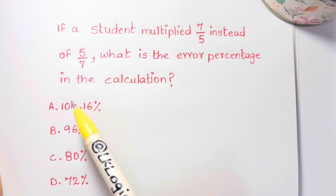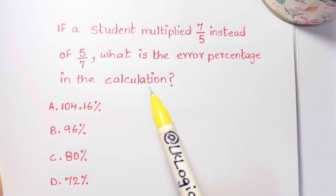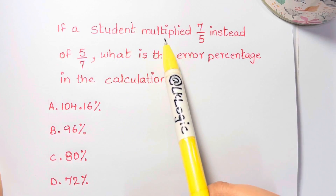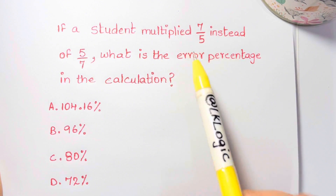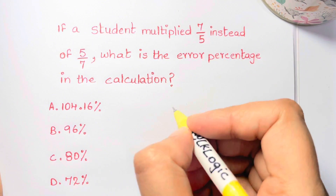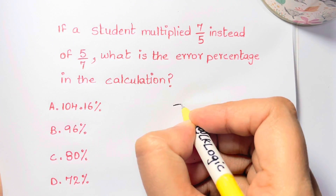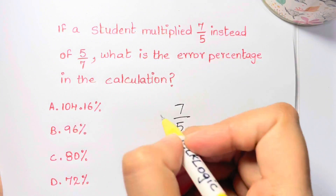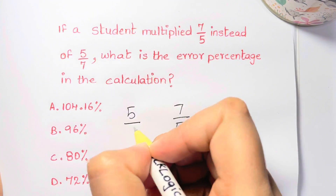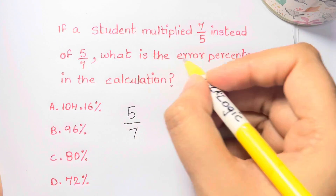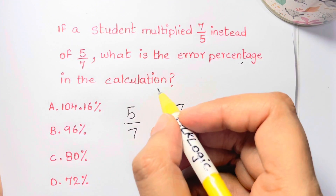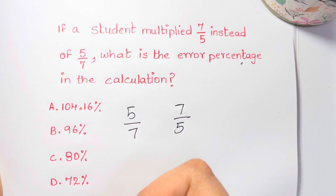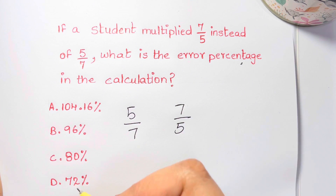Hi guys, here's a percentage problem: if a student multiplied 7 over 5 instead of 5 over 7, what is the error percentage in the calculation? Out of four choices, you can try it and then look for the answer.